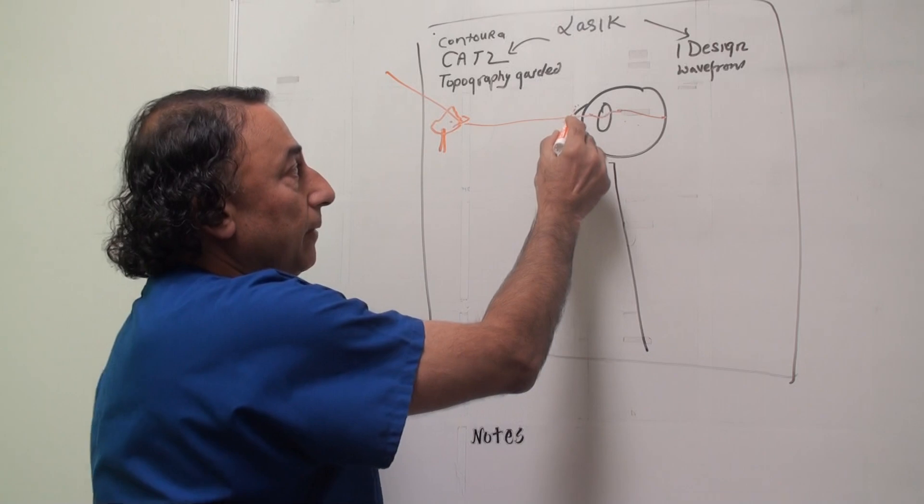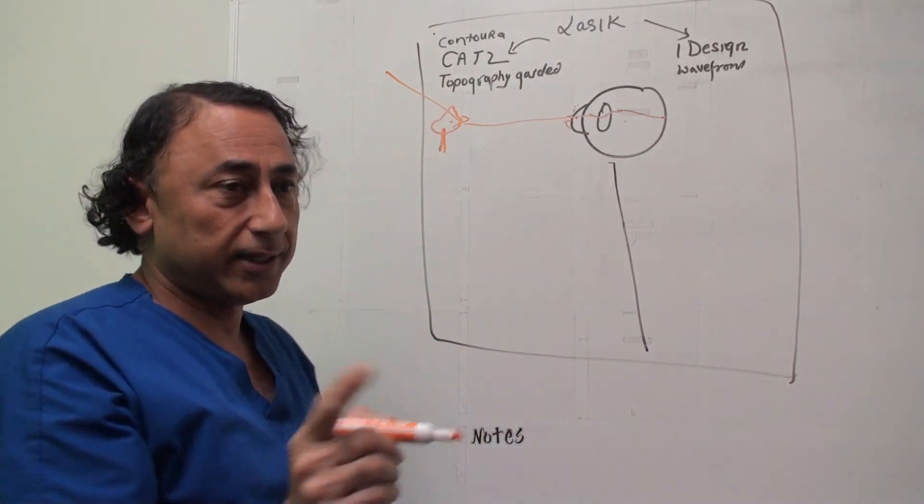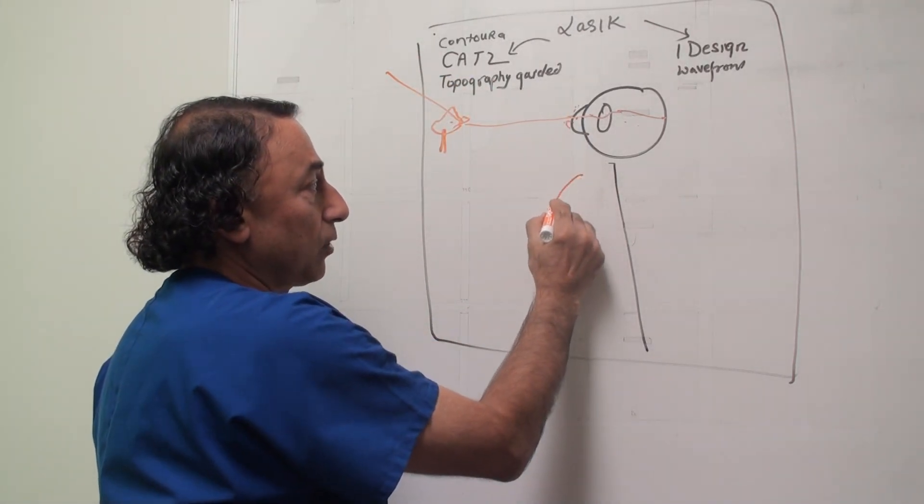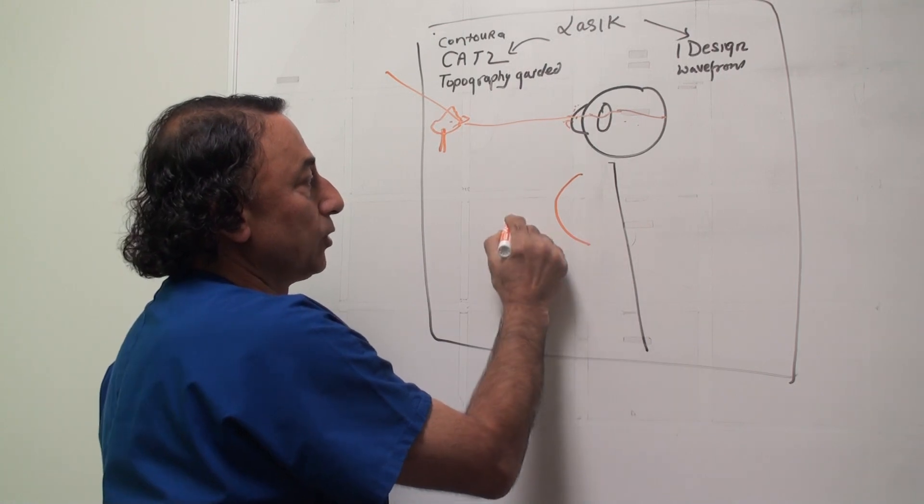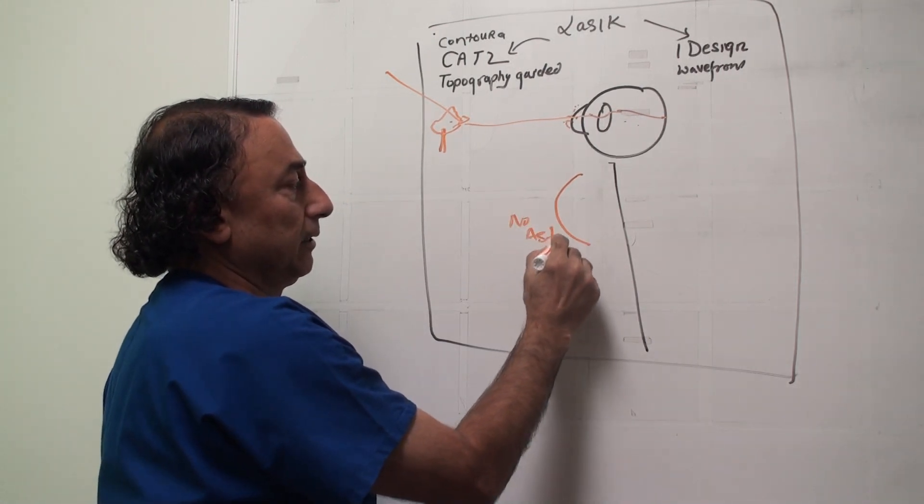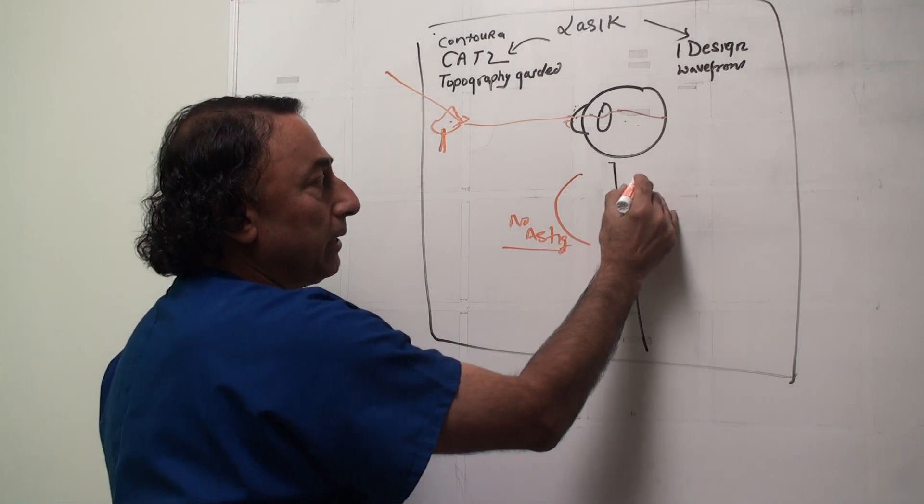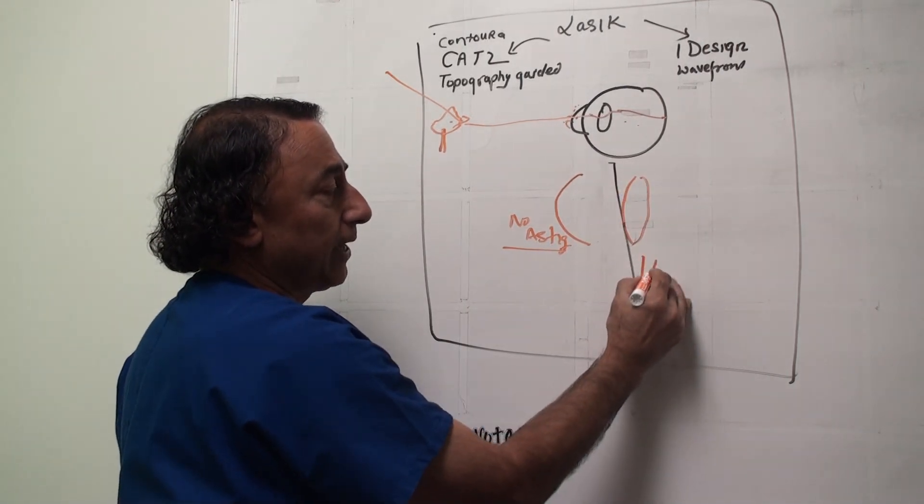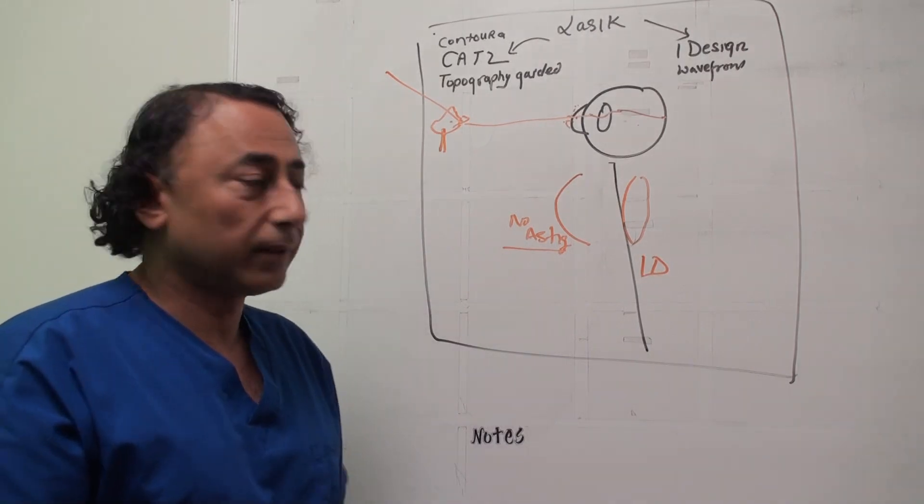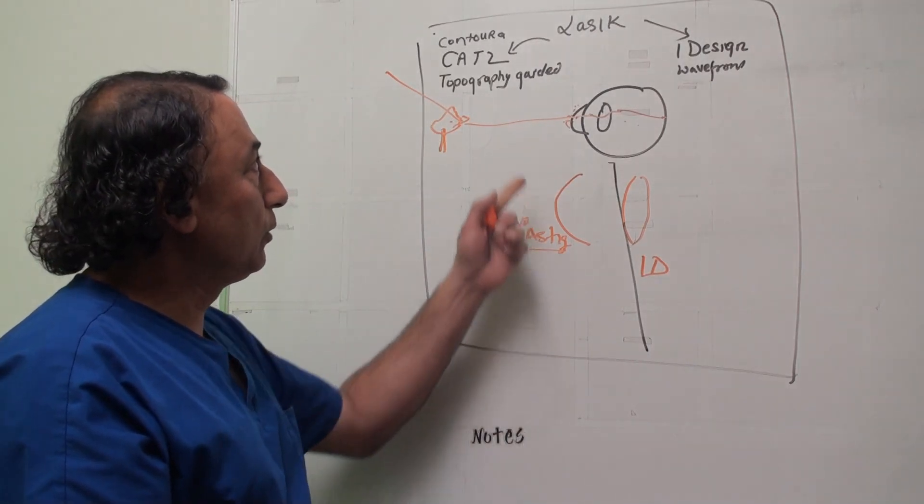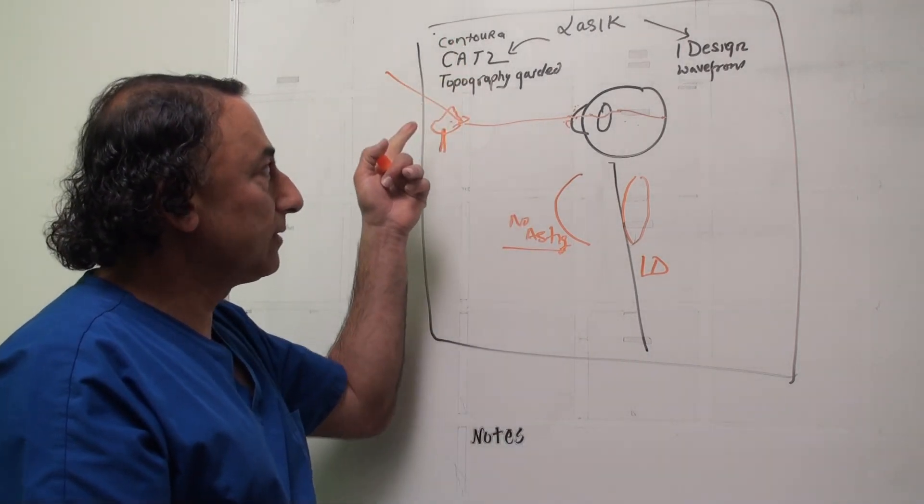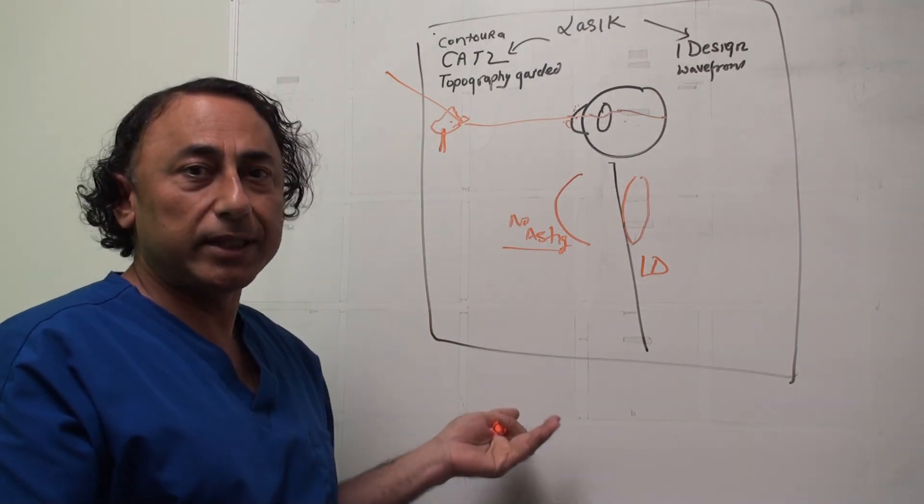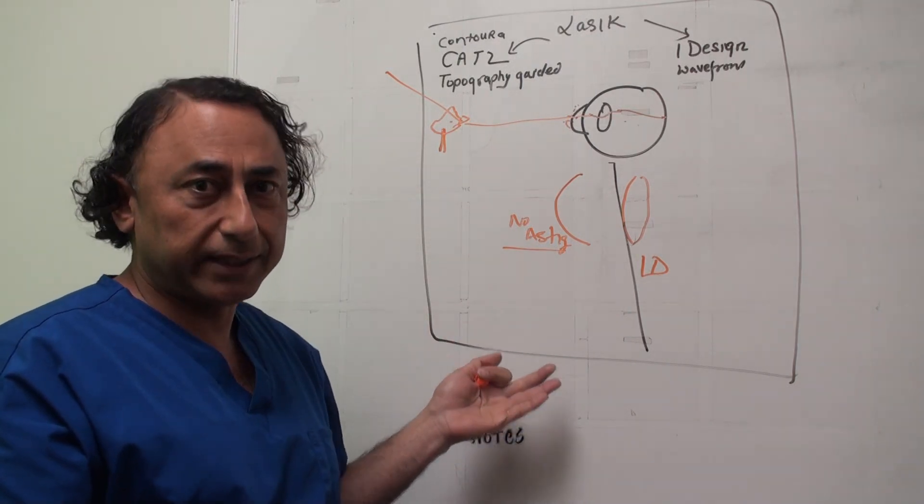This is going to get interesting, so pay attention. Let's say the front cornea has no astigmatism, but the lens is slightly tilted and we get one diopter of astigmatism. When you do the topography guided system, it won't treat the astigmatism because it doesn't detect that.